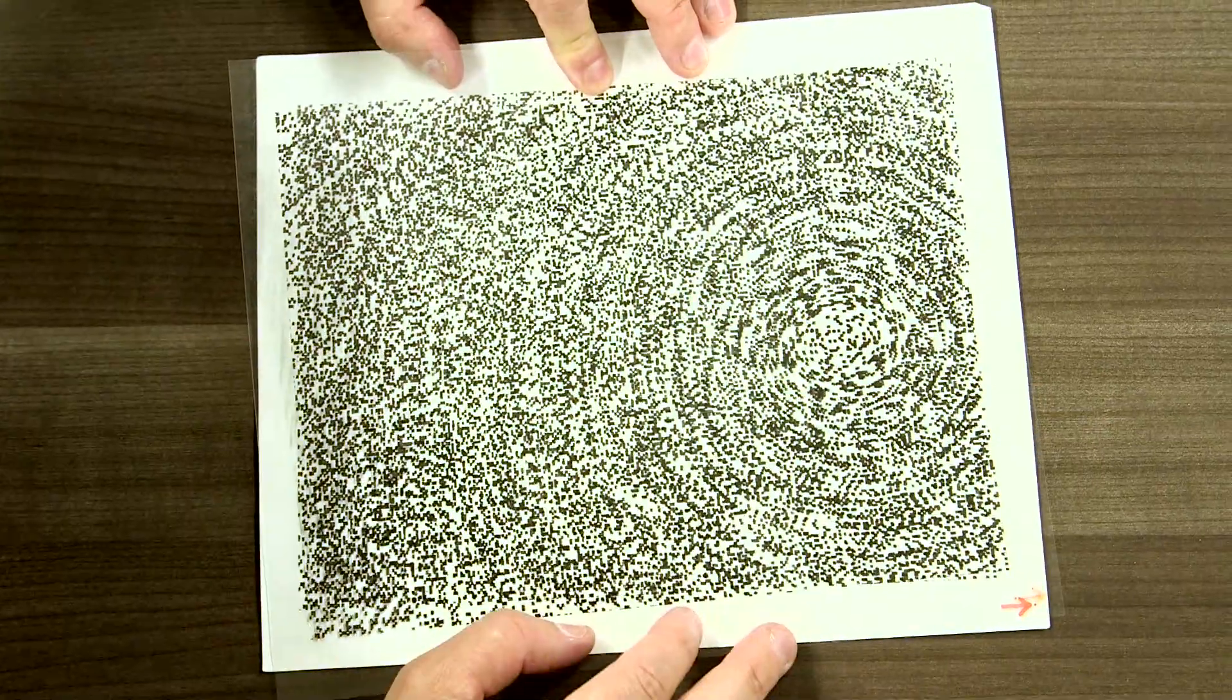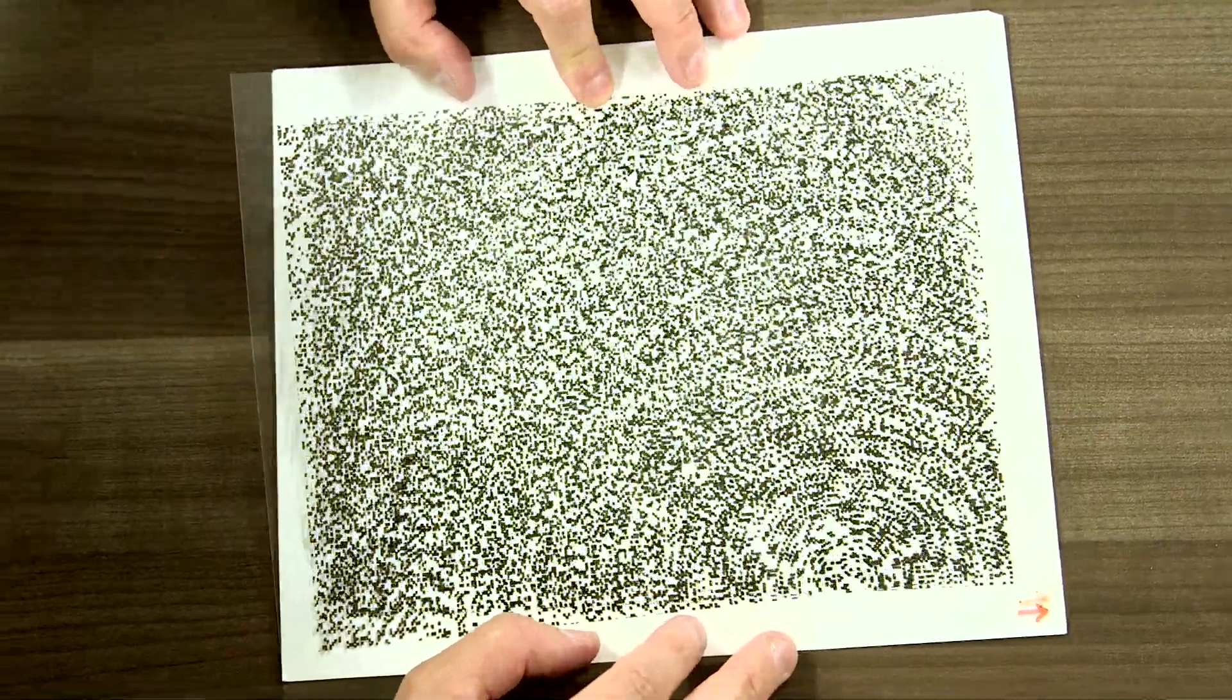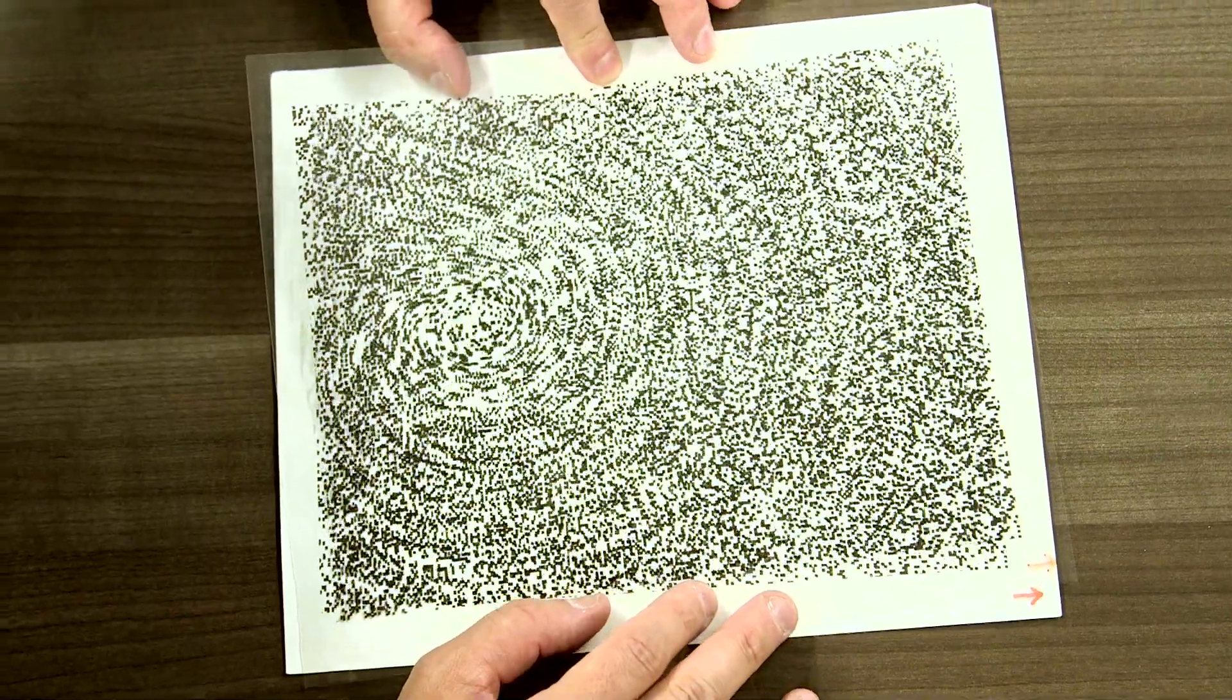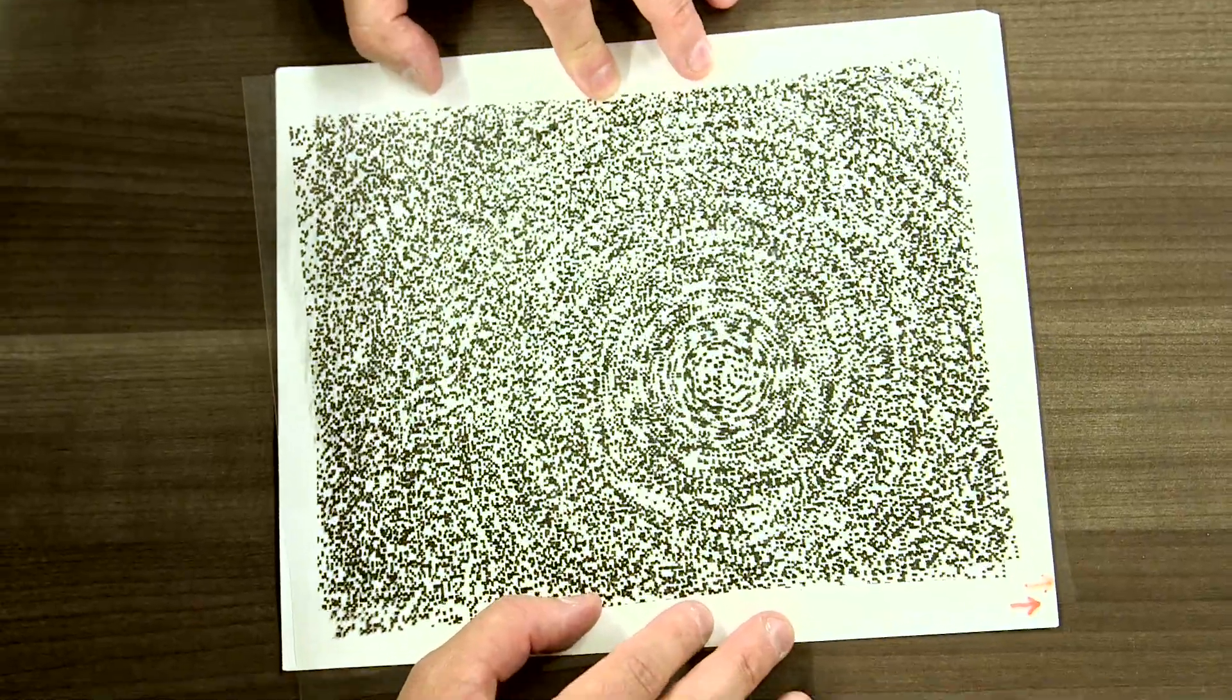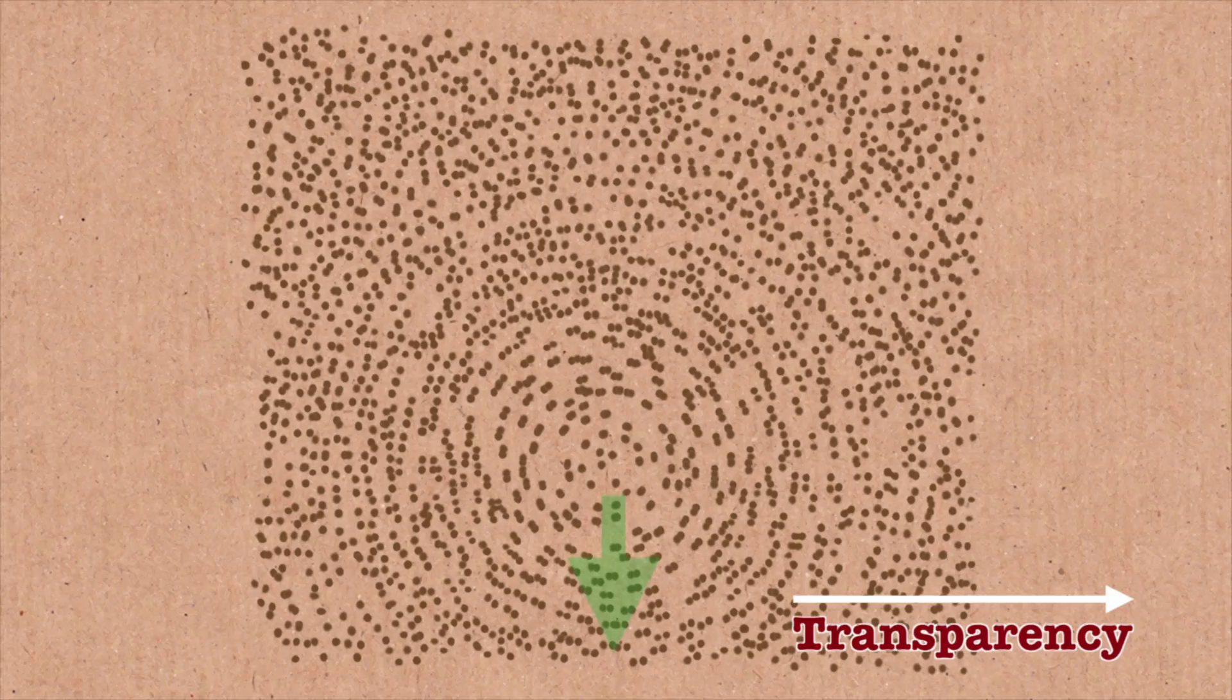But watch what happens when I do this. I'm going to move it up and down in this direction. Then the center moves sideways, horizontally. And when I move the transparency sideways, it goes up and down. So the motion of the center is always perpendicular to the direction in which I am moving the transparency. That's really strange.